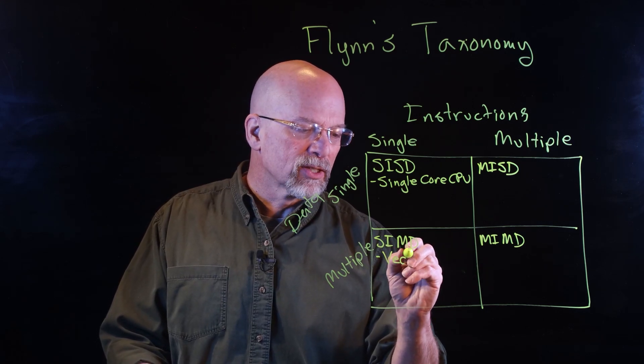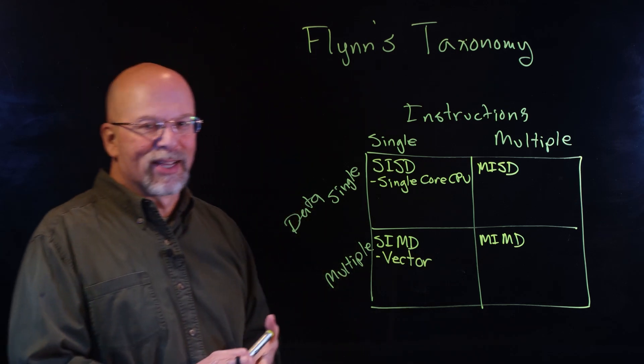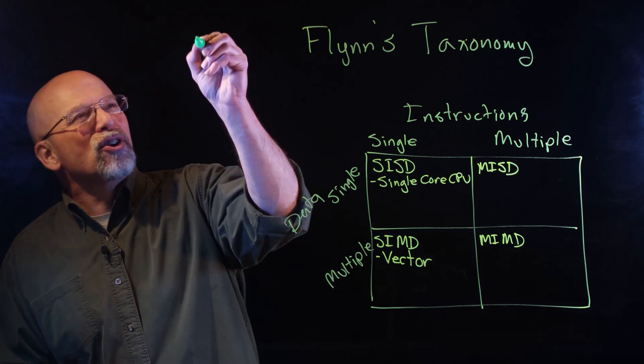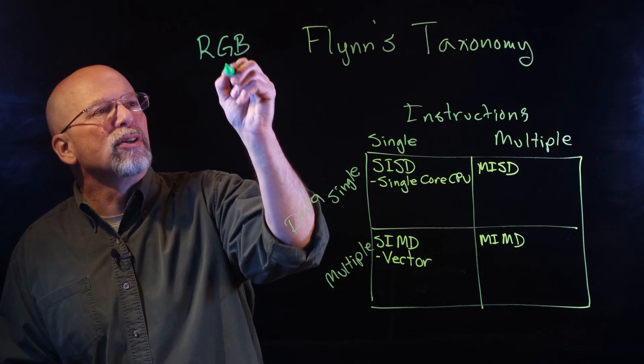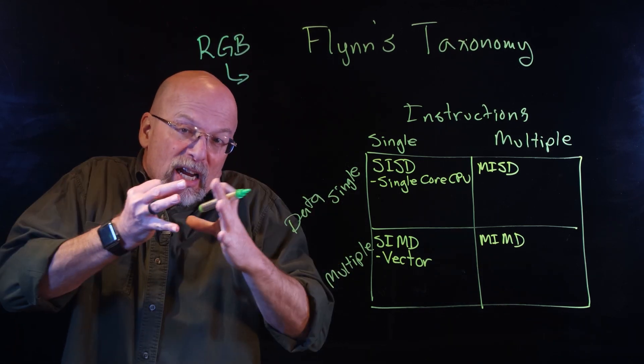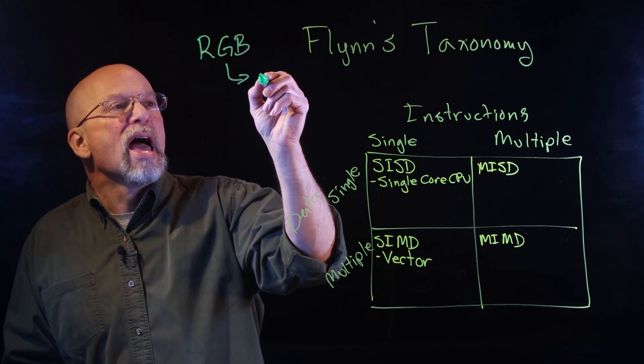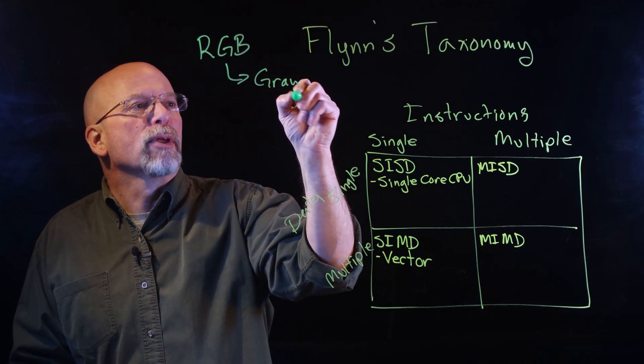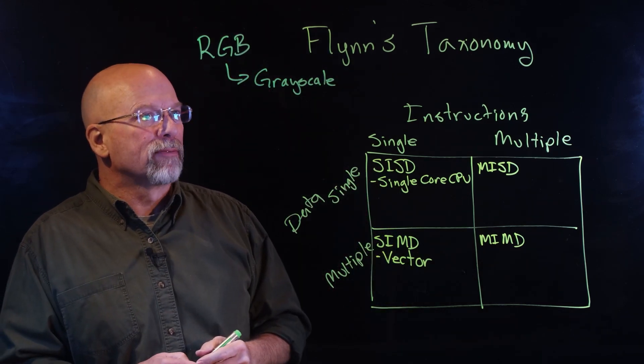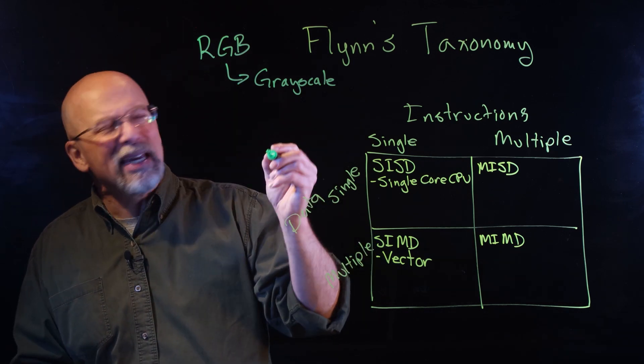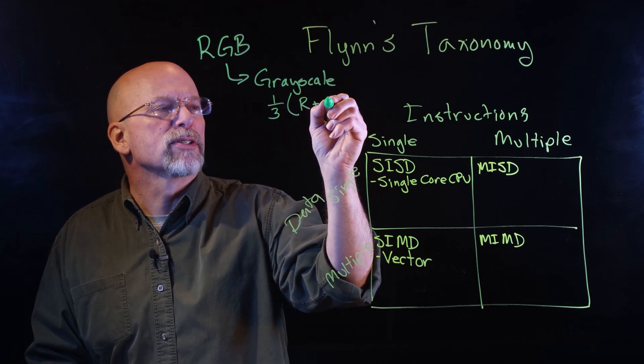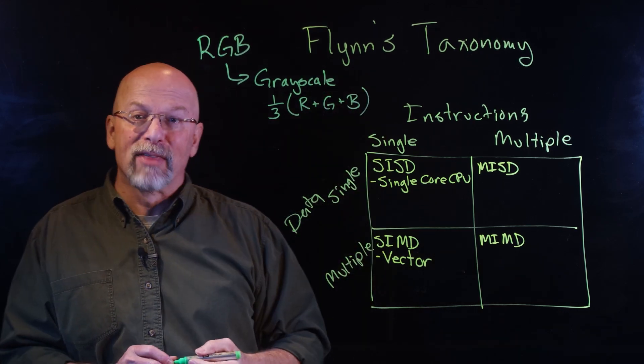The primary application of this is something called vector processing. To picture this, let's use an example of a picture. Let's assume that I have a picture that each pixel is stored as RGB, as a value of red, a value of green, and a value of blue, combined together to make a 24-bit color. And I want to convert that to something we call grayscale, being different levels of gray. How would I do this conversion? Well, one of the easiest ways is to simply say, what's one-third of the amount of R, plus the amount of G, plus the amount of blue? Add the three colors together, take the average.